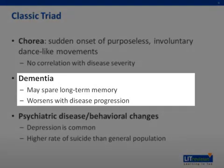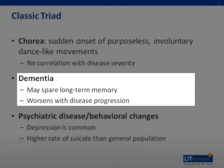Another finding is dementia. The cognitive decline in Huntington's disease often spares long-term memory, but impairs executive functions such as organizing, planning, checking, or adapting to alternatives. These features worsen over time, with speech deteriorating faster than comprehension.